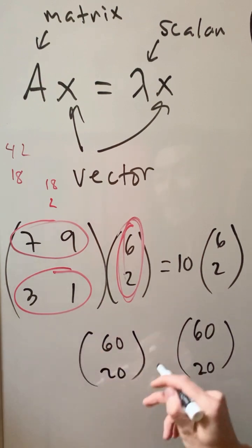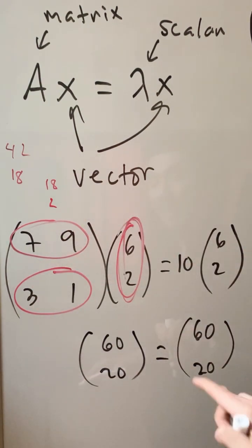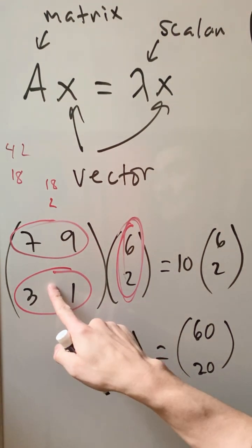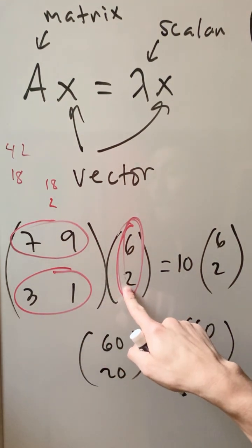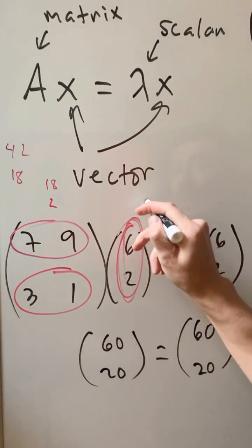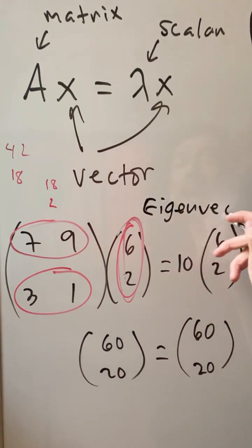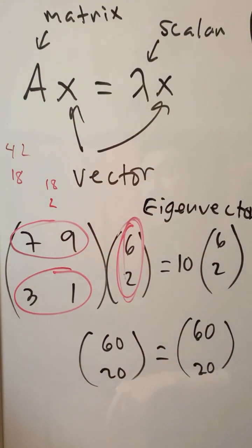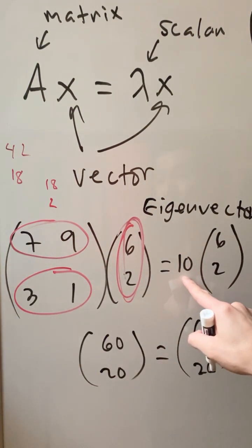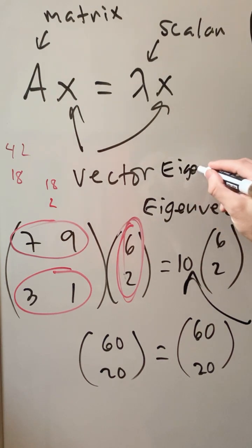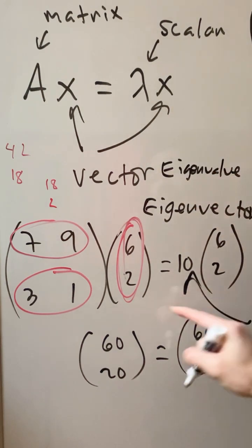We have equality here — it's balanced. Because this happens, here is what we conclude: this is a matrix, this is a vector, but because this works, it's not just a vector — it's what we call an eigenvector of this matrix. And this is not just a scalar — because this magic happens, we call it an eigenvalue of this matrix.